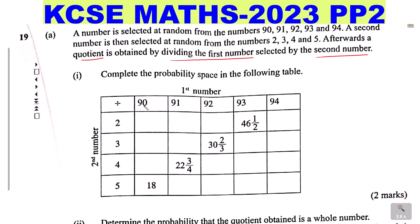We can now begin filling the table. 90 divided by 2 gives 45. Then 91 divided by 2 gives 45 and a half. Then 92 divided by 2 gives 46. Then 94 divided by 2 gives 47.